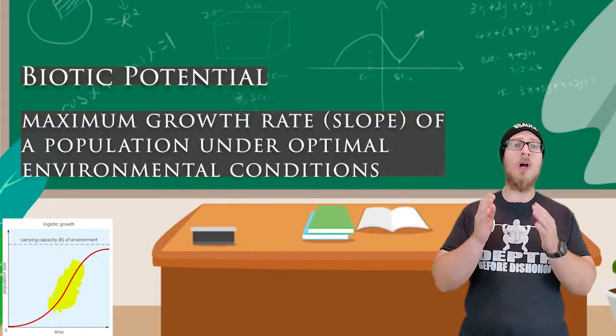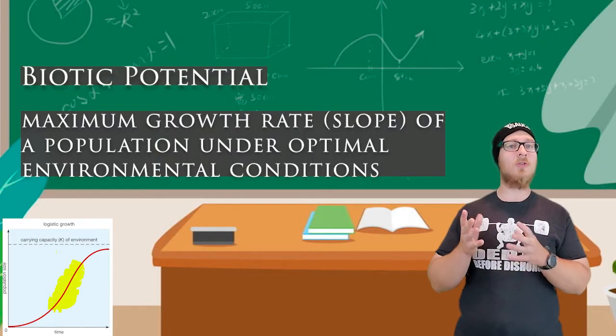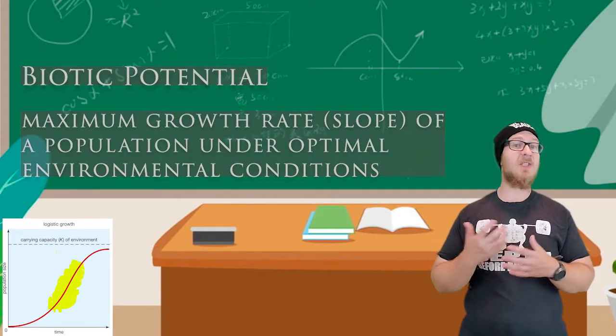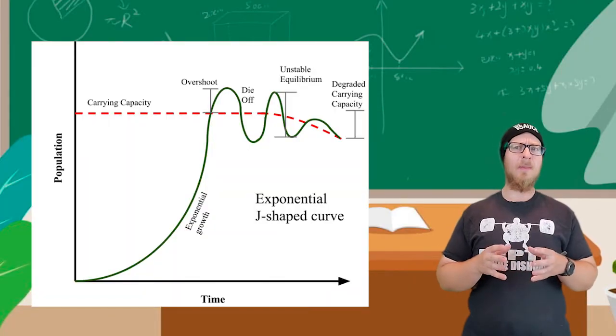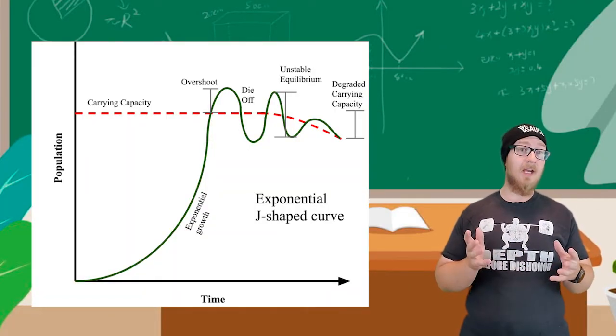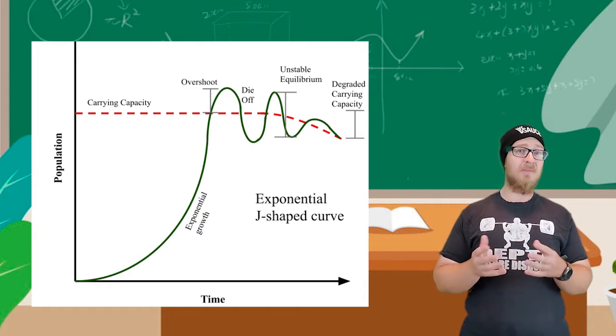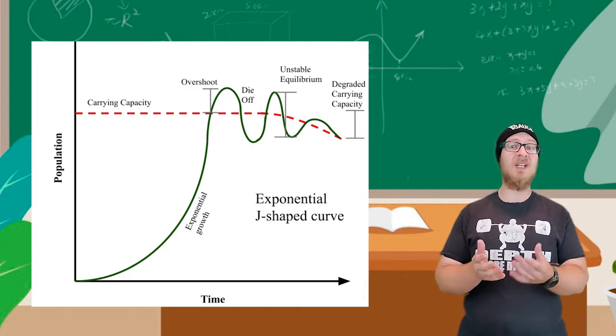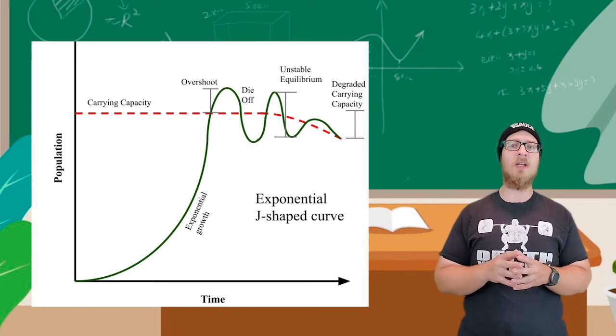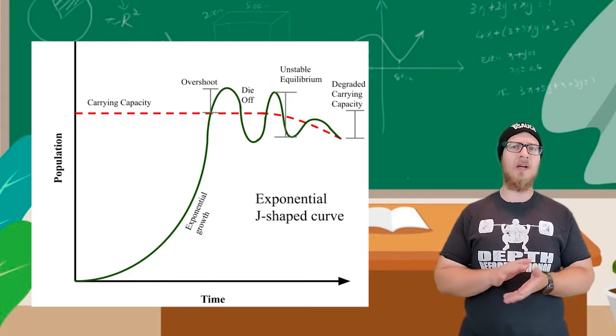Should a population overshoot and go above the carrying capacity, the depletion of resources results in a dieback of the population back to below the carrying capacity.